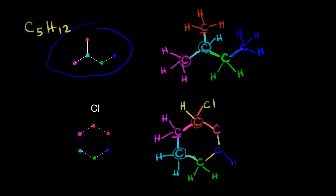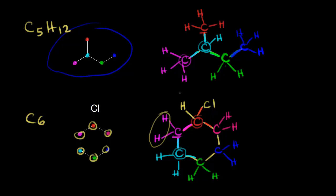So what's the total molecular formula for this compound? We have a total of six carbons — one, two, three, four, five, six — so C6. And how many total hydrogens? We have two on five carbons, and then one more on the carbon bonded to chlorine. Two times five is 10, plus one is 11, so H11. And then we have a chlorine as well. So C6H11Cl is the molecular formula for this compound.